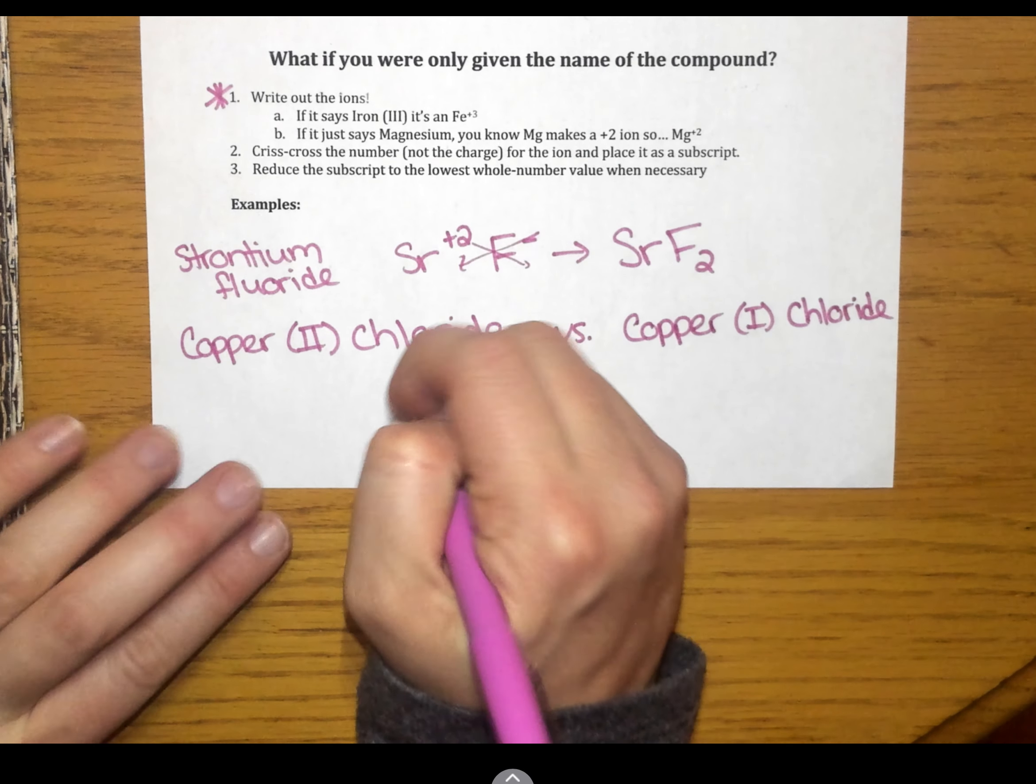For both of these compounds, my anion is chloride. Chloride is a halogen. It's in group 17. It has 7 valence electrons. Therefore, it's going to gain 1 to make a negative 1 charge. So, in both of these compounds, my anion is Cl negative.